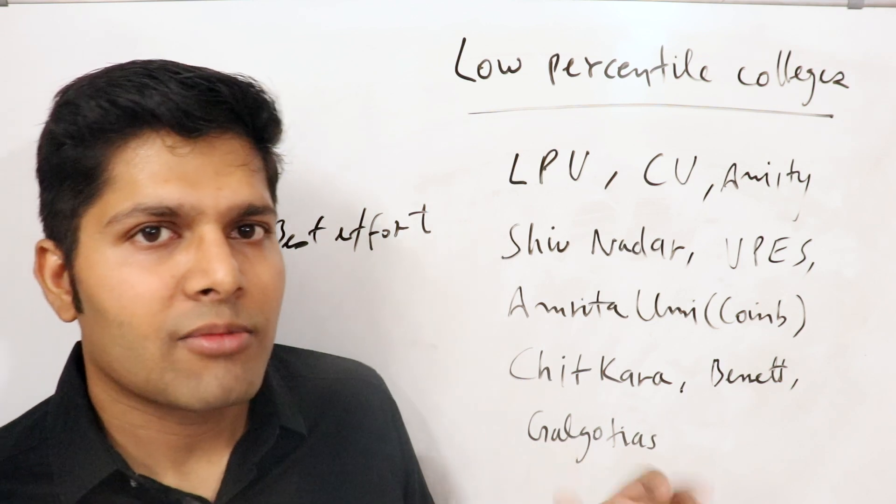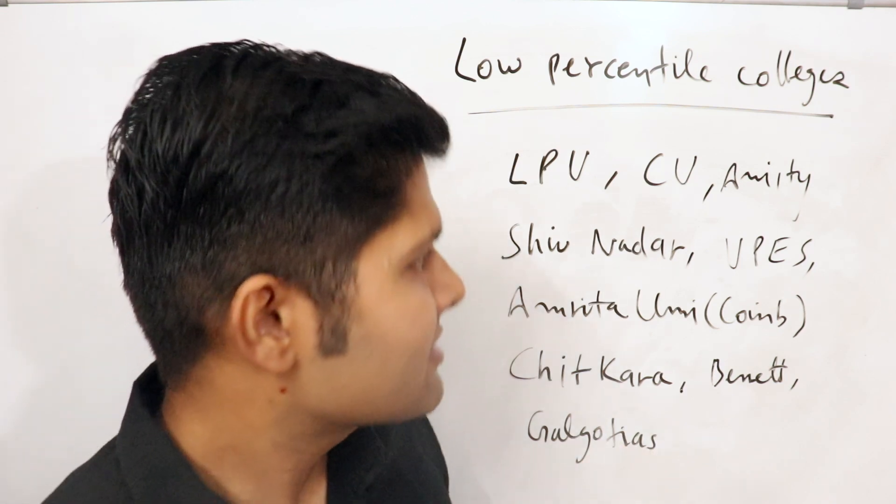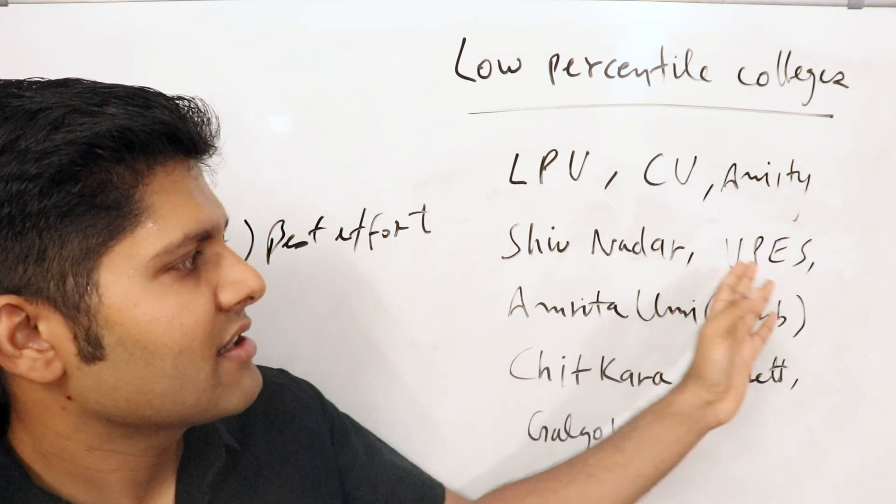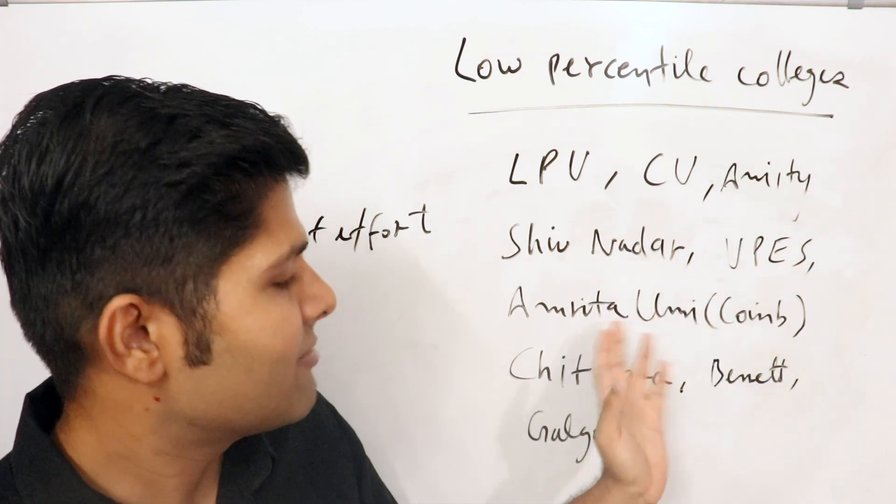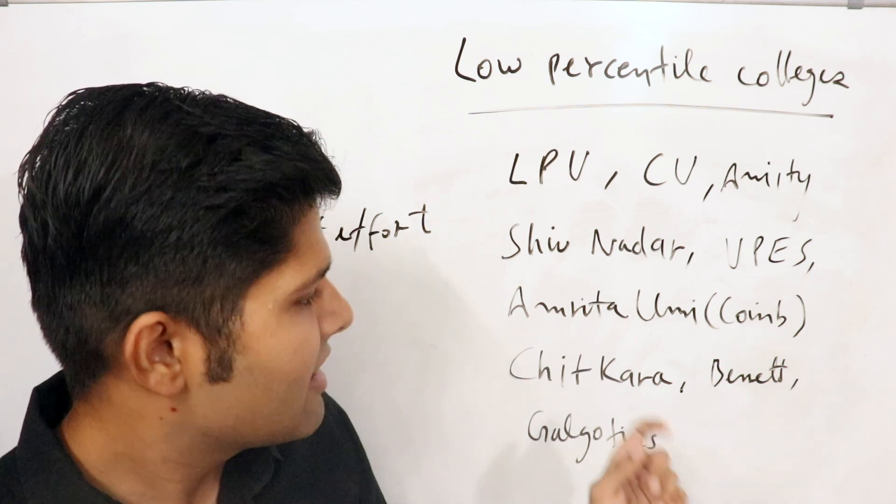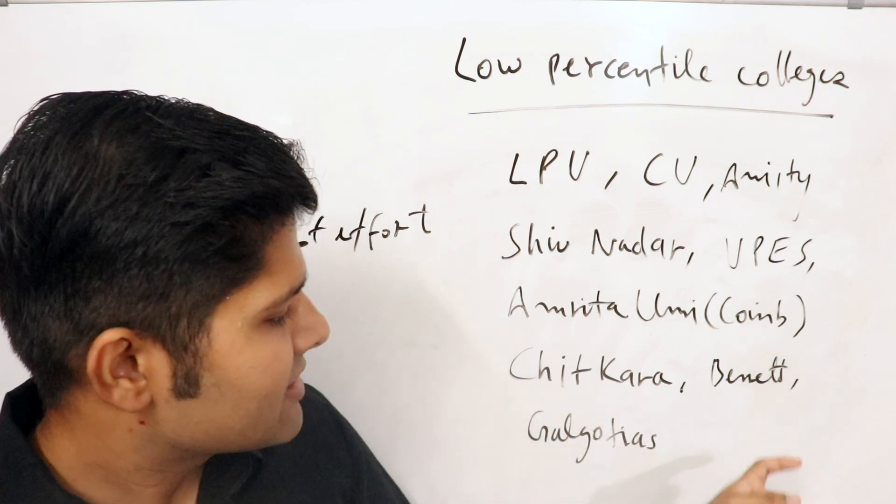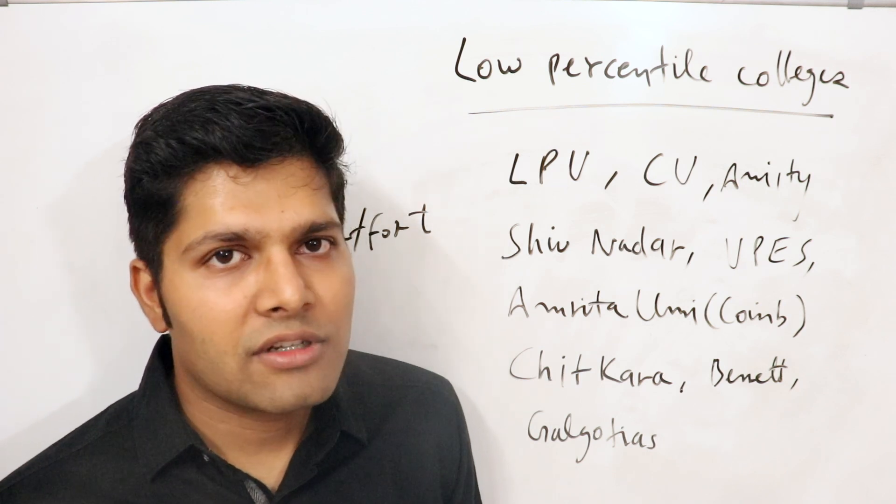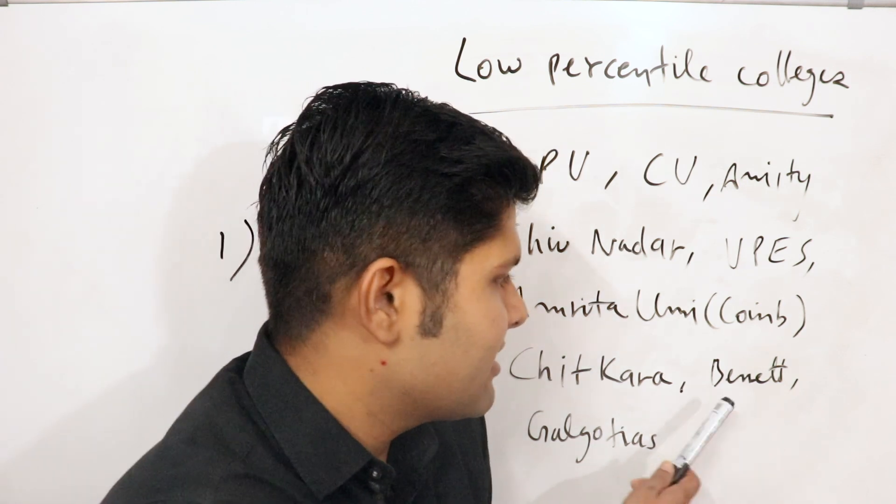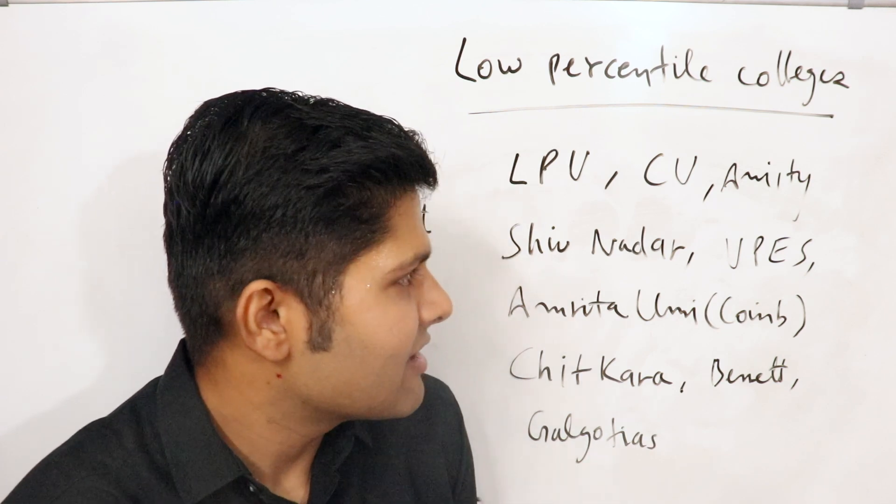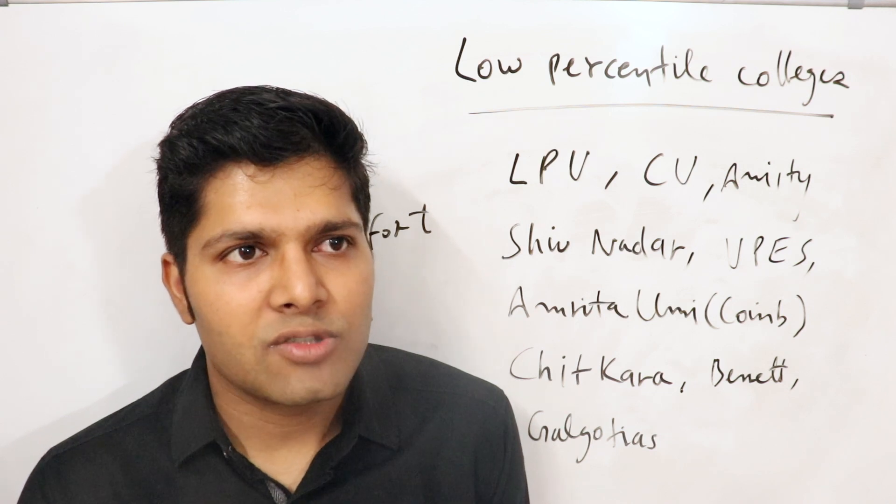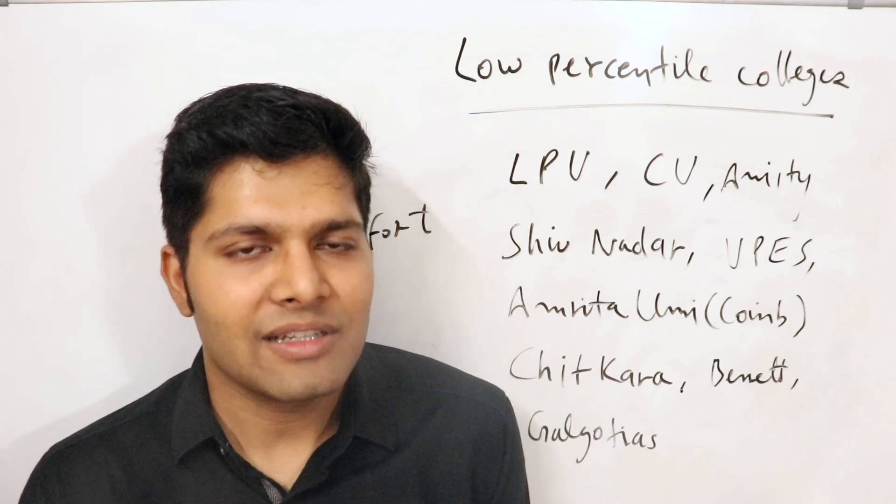So let's start. This is the list: LPU, CU, Amity, Shiv Nadar, UPES, Amrita University the Coimbatore campus, Chitkara University, Bennett University, and Galgotias University. Some of these have very good infrastructure, especially Bennett I can assure you. Galgotias is also fine, LPU, Amity, so these are good colleges.